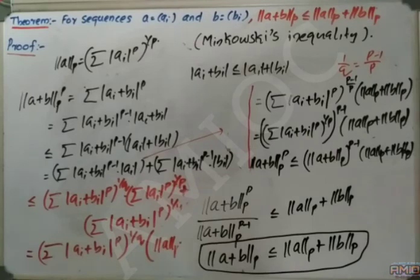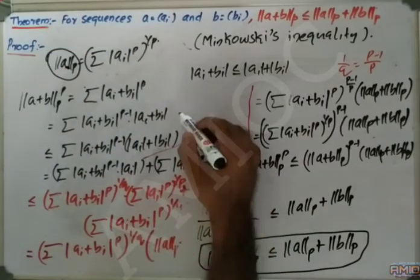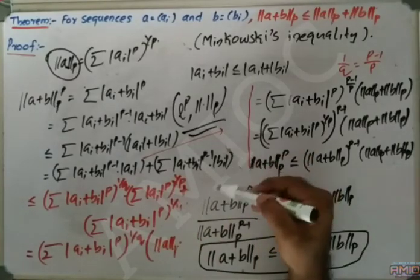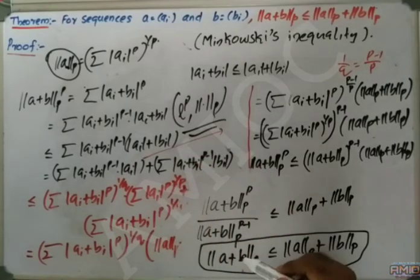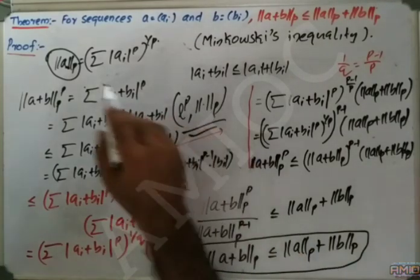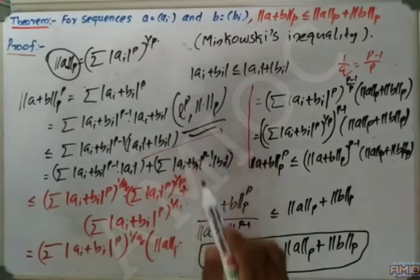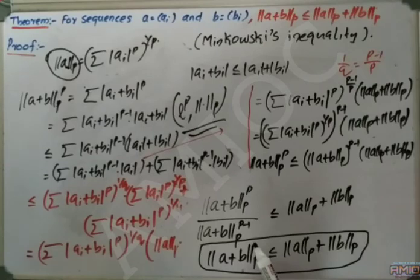So we have proved Minkowski's inequality, which is the triangle inequality for the Lp space with the defined norm ‖a‖_p = (Σ|a_i|^p)^(1/p). With this, we can prove that Lp with the p-norm is a normed space — the other three conditions also hold and can be checked trivially. In the next classes, we will prove the integral forms of Hölder's inequality and Minkowski's inequality. Thank you.